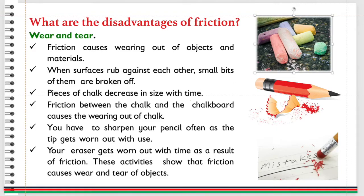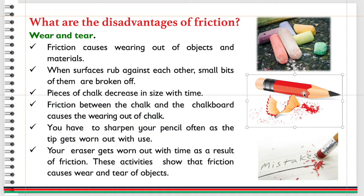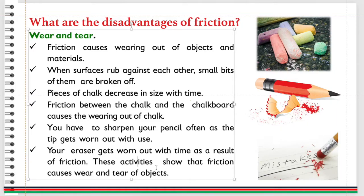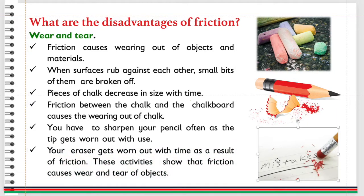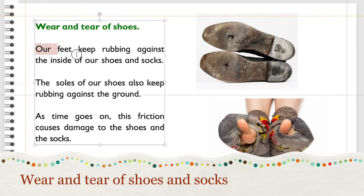Friction between the chalk and the chalkboard causes the wearing out of chalk. You have to sharpen your pencil often as the tip gets worn out with use. Your eraser gets worn out with time as a result of friction. These activities show that friction causes wear and tear of objects.